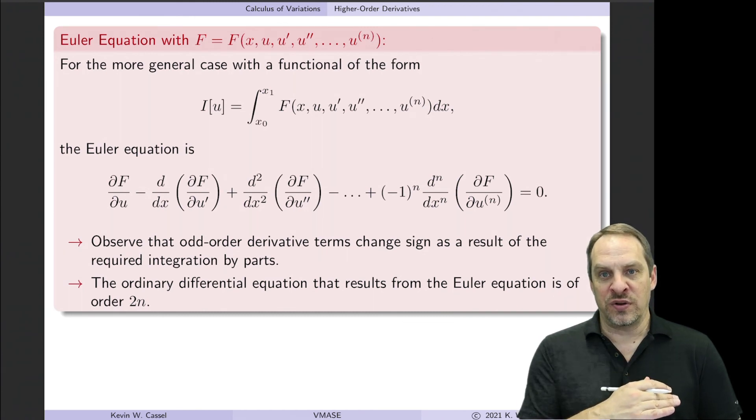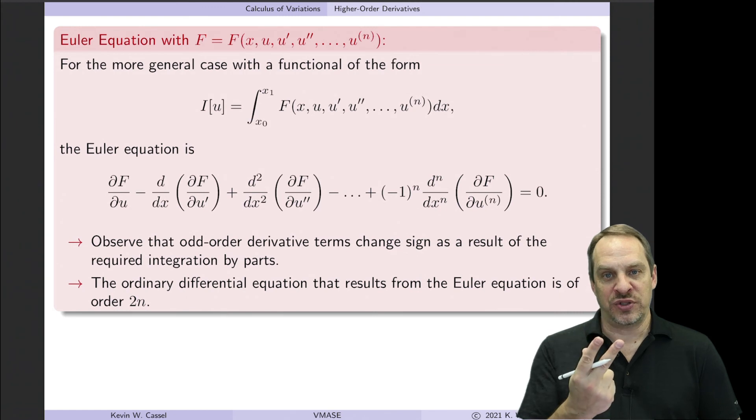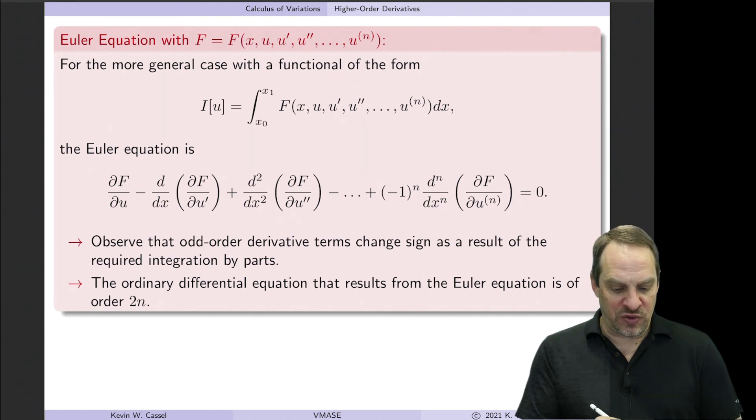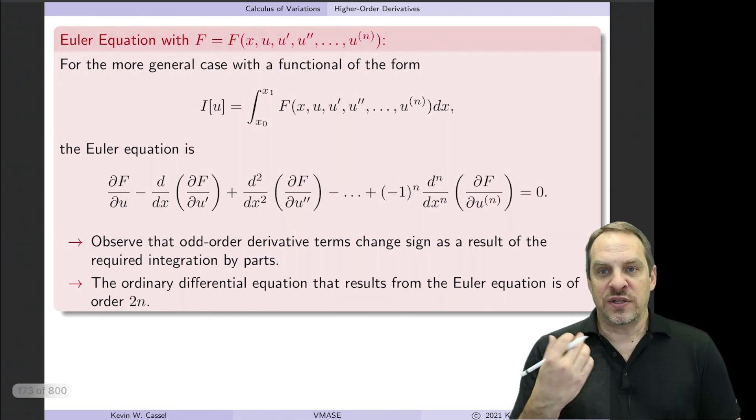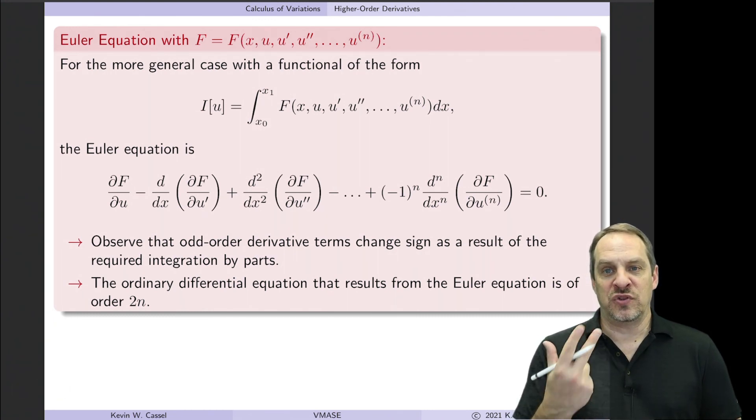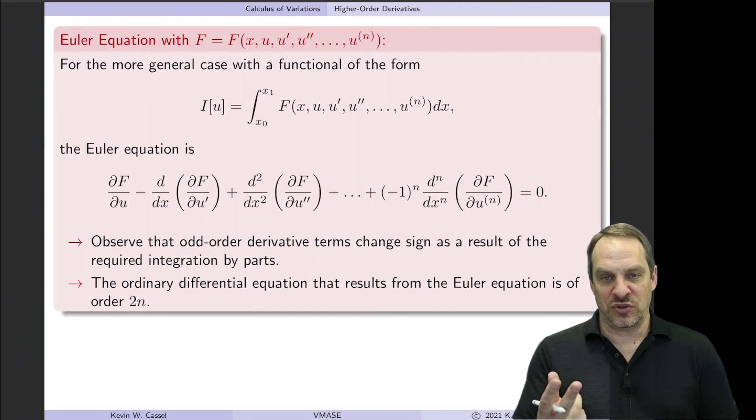So in the ones we've been dealing with so far, u prime is the highest order derivative, so that's 1, so our Euler equation is second order. And then in the second order case in the previous slide, it's fourth order equation. If it's nth order derivative inside our functional, then the order would be 2n. Now in the next video, we're going to look at what happens when we have two independent variables, so that would be like a two-dimensional problem rather than a one-dimensional problem. Things will get much more complicated, but it's the same basic approach and the same basic steps.